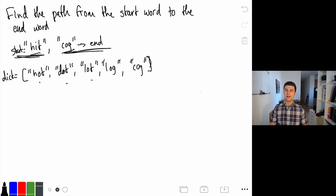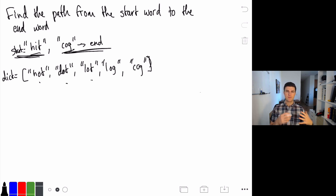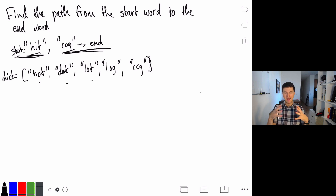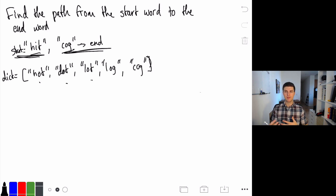Let's see if we can do better. We know we're looking for a path from one word to another, which immediately strikes me as a searching problem — likely depth-first search or breadth-first search. Because I'm looking for the shortest path, I'm immediately thinking breadth-first search, since BFS is great for finding shortest paths. Depth-first search is slightly easier to implement, and I find it a bit easier when you actually want to recreate the path itself rather than just find the length. But in this case I'm thinking breadth-first search.